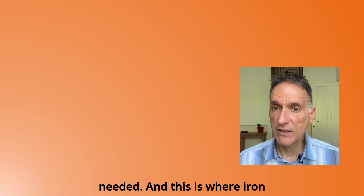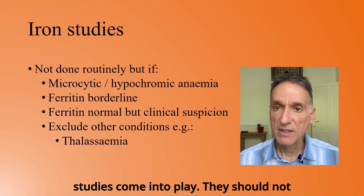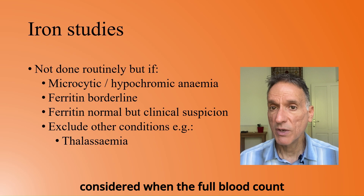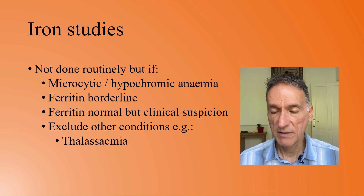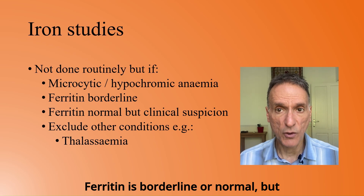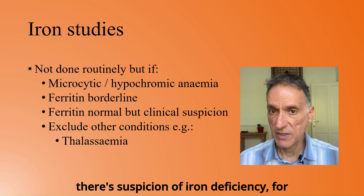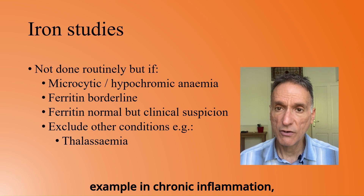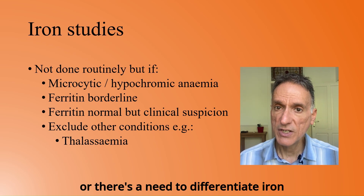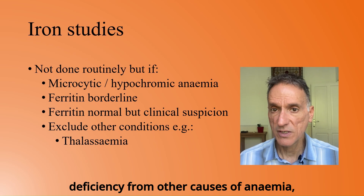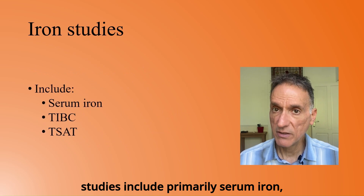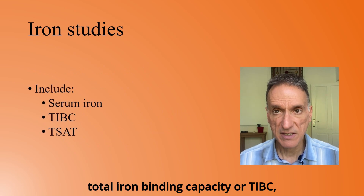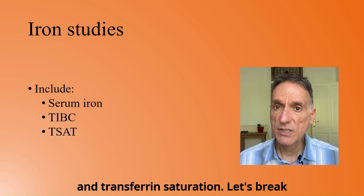This is where iron studies come into play. They should not be done routinely, but should be considered when the blood count shows microcytic or hypochromic anaemia, when ferritin is borderline or normal but suspicion of iron deficiency remains — for example in chronic inflammation — or when there is a need to differentiate iron deficiency from other causes of anaemia, like thalassaemia. Iron studies include primarily serum iron, total iron binding capacity or TIBC, and transferrin saturation.